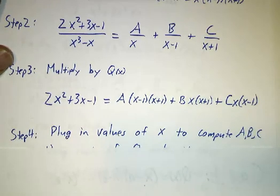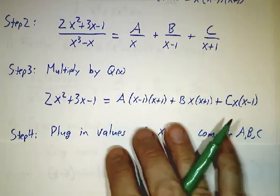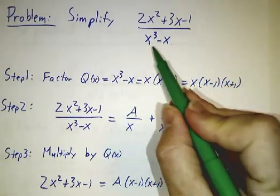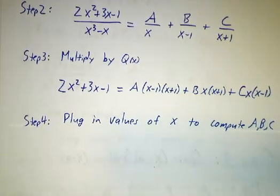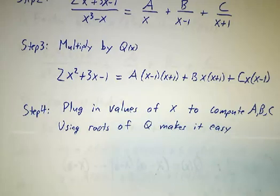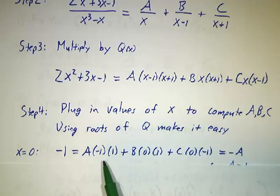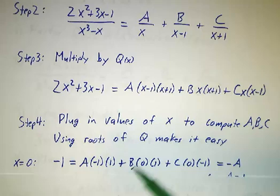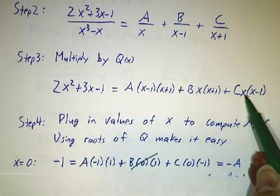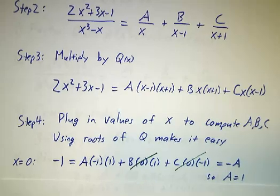And then you plug in the values of x at the roots. So the roots of this polynomial are 0, 1, and minus 1. So we're gonna plug in 0, 1, and minus 1. And every time we plug in a value, it's gonna give us one of our constants. So if you plug in x equals 0, well, B gets multiplied by x, that's 0, so this doesn't contribute. C gets multiplied by x, that's 0, this doesn't contribute. The only thing that's in there is an A, so negative 1 is minus A, that tells us that A is 1.